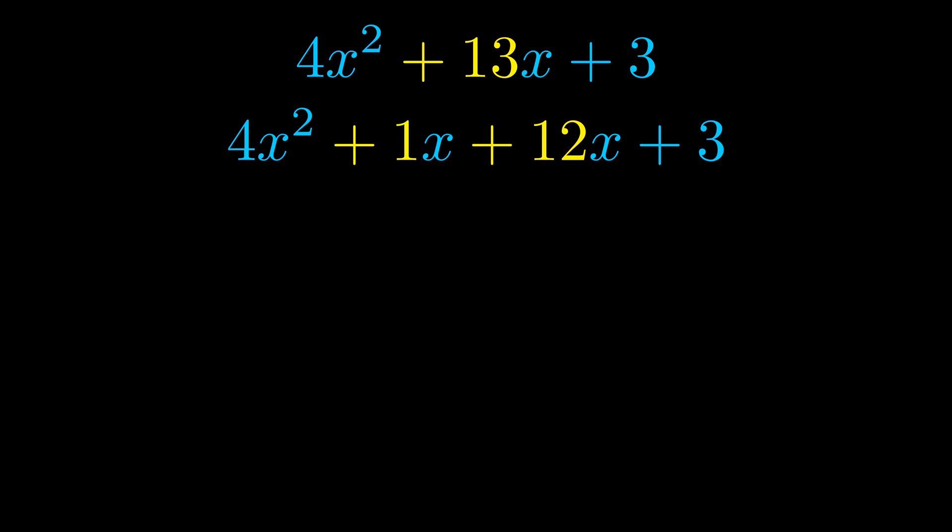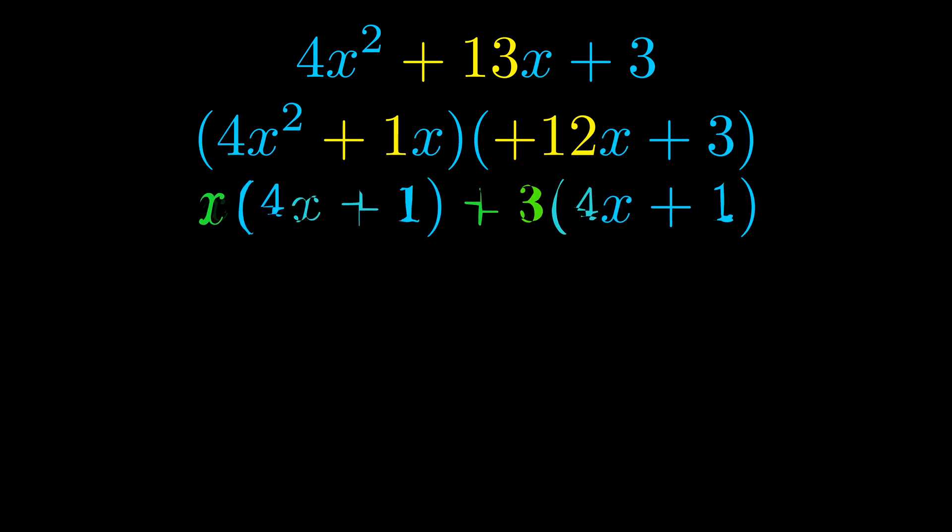Once we've done this we go ahead and put parentheses around the first term and the last term. And we do that so that we can take the greatest common factor out of both terms. We can see the greatest common factor is now outside in green.